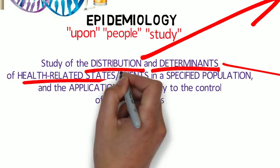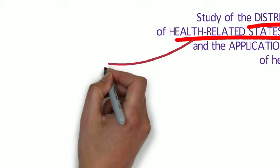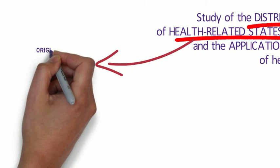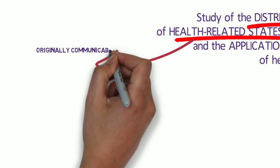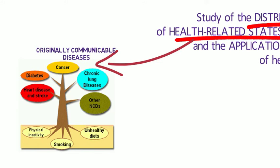Originally, epidemiology was focused exclusively on epidemics of communicable diseases, but subsequently expanded to address endemic communicable diseases and non-communicable infectious diseases. By the middle of the 20th century, additional epidemiological methods had been developed and applied to chronic diseases, injuries, birth defects, maternal child health, occupational health, and environmental health.